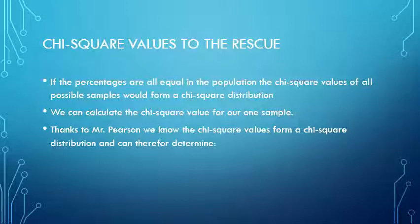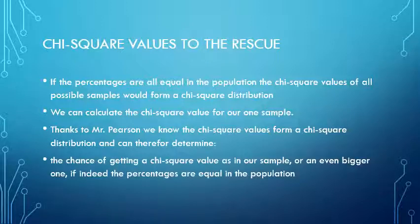Thanks to Mr. Pearson, we know that the chi-square values form a chi-square distribution. With those two given, we can determine the chance or probability of getting a chi-square value such as in our sample, or an even bigger one, if indeed those percentages are equal in the population. That's actually quite a tricky sentence, so read it carefully.